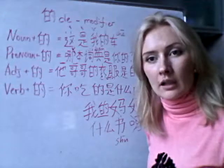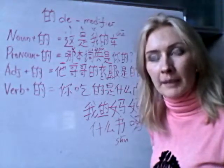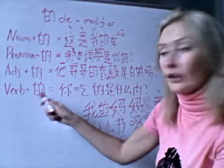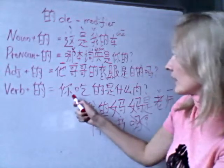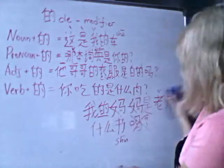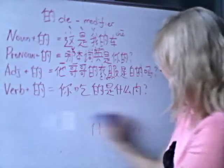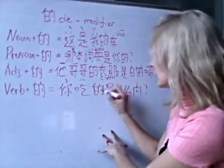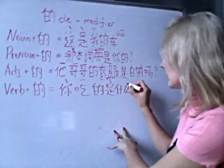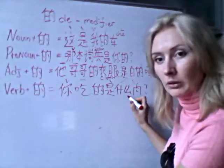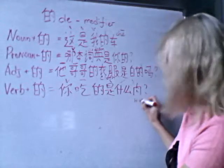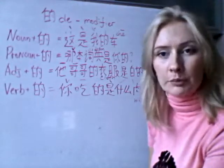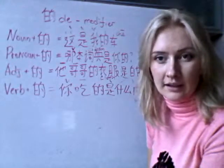I will show you the scheme of making a sentence in another lesson, so don't worry, you will get there. The last one is the verb plus 的. Let's see the example: 你吃的是什么肉? How will you translate that? 什么 means 'what' or 'which,' and 肉 means 'meat.' So the translation is: 'What kind of meat do you eat?'